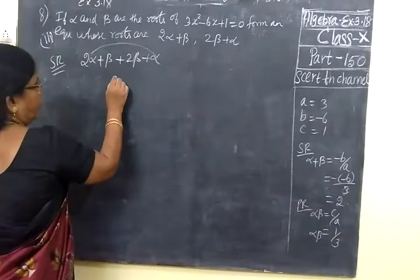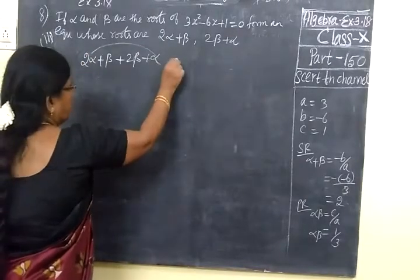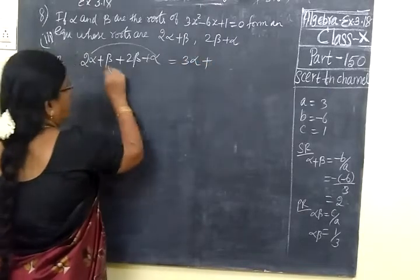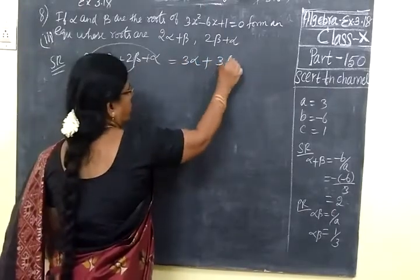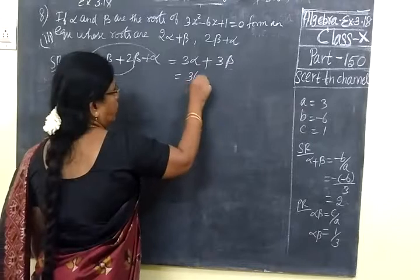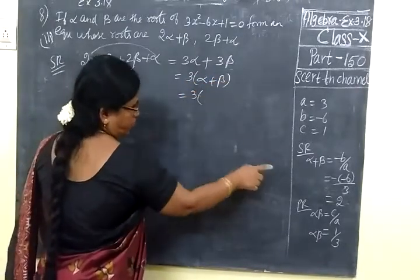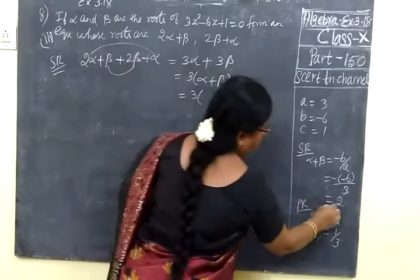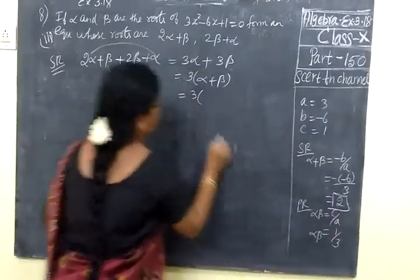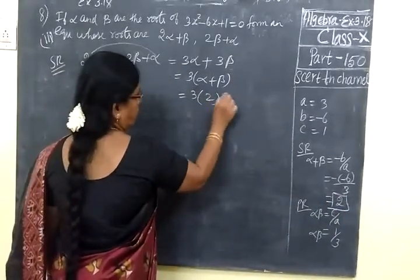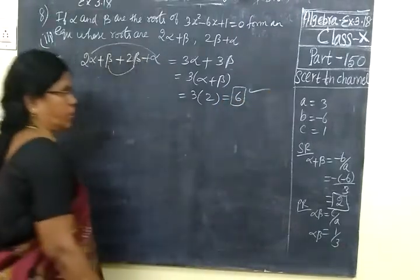2 alpha plus alpha, 3 alpha. This is equal to 3 alpha plus 2 beta plus beta, 3 beta. Take 3 common alpha plus beta. 3(alpha plus beta), in the equation alpha plus beta is 2. This is equal to 3 into 2 which is equal to 6.